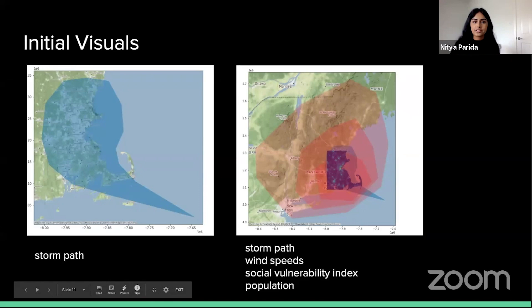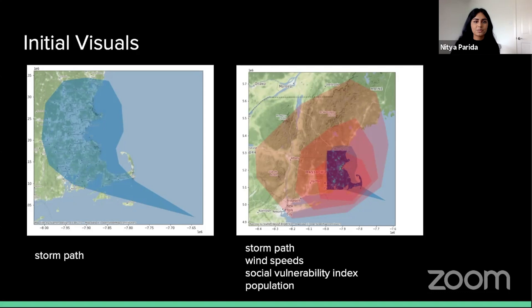From the logistics team, we have a couple of visuals. On the left-hand side, we see a projection of the storm's path — it moves to the northwest from the Atlantic Ocean, eventually hitting the New England region. On our right, we have a combined graph that helps us visualize the storm paths, as well as its wind speeds and SVI (Social Vulnerability Index), plus the population data. We can gather from this visual that all areas are being hit pretty equally.